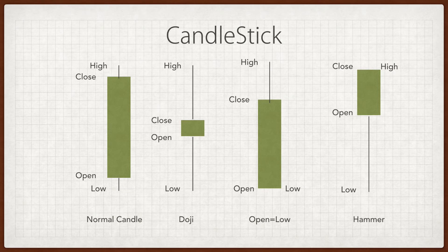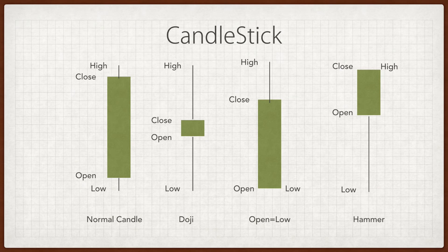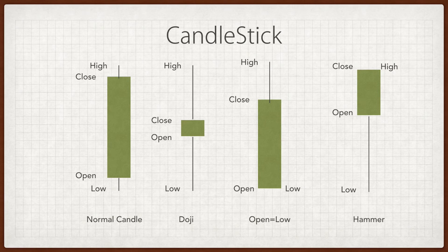Then there is a hammer, which is the most important one, because it signifies a reversal when it's in a proper trend. At the end of a downtrend, if you see a hammer, it means sellers initially brought the share down to 95, but then new investors came in, picked up the share price, and took it to the day's high, closing right there — creating a hammer.